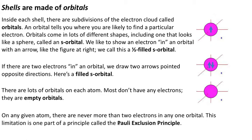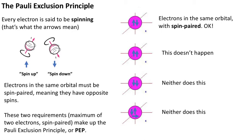On any given atom, there are never more than two electrons in any one orbital. This limitation is one part of a principle called the Pauli Exclusion Principle. Let me flesh that out a little bit for you. The idea is that every electron is said to be spinning, and electrons can only spin in two directions, like counterclockwise and clockwise. We'll just call one of those spin up and the other one spin down.